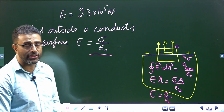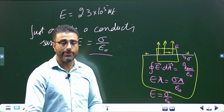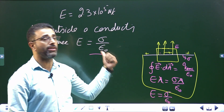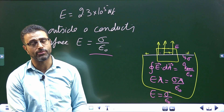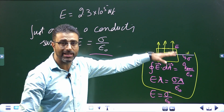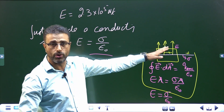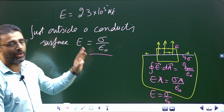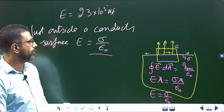If it is a non-conducting sheet, then it is sigma divided by twice epsilon naught. But if it is a conducting sheet, and that too very close to the surface, it is sigma divided by epsilon naught.